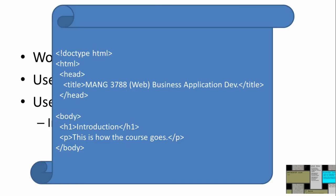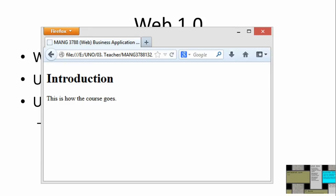In the body section you see the content to be displayed on the web page — for example, a heading called 'Introduction' and a paragraph that says 'This is how the course goes.' The server just sent this file to the browser, and the browser interprets all those codes. Opening the browser window, you see 'Introduction' and 'This is how the course goes' — exactly what the HTML told the browser to display. The HTML codes are for the browser, which converts them into something readable by the person.